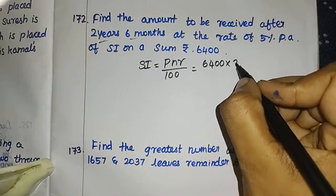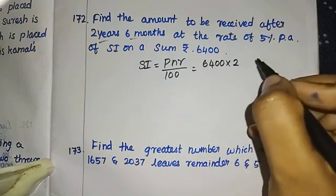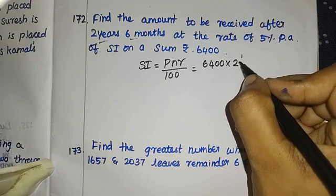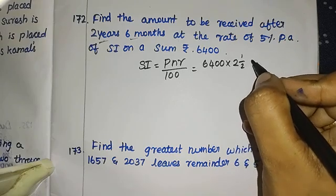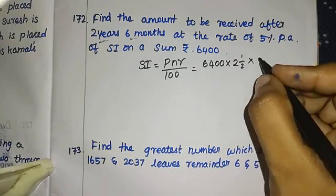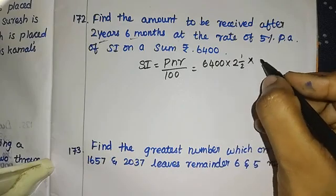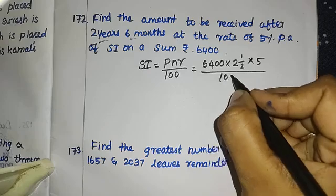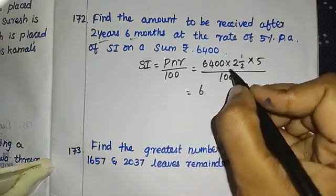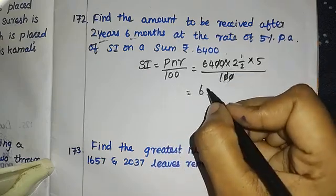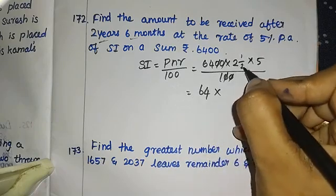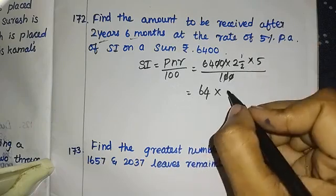The number of years is two years six months. Two years is fine, and six months means six divided by twelve, which equals one-half. So the total time is two and a half years. Substituting: 6400 into five divided by hundred, with time as two and a half years.